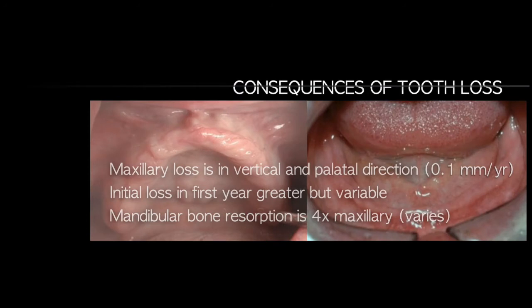Maxillary bone loss occurs in a vertical and palatal direction at a rate of 0.1 mm per year, with greater initial loss in the first year. On the other hand, mandibular bone loss is four times greater than maxillary loss, though it varies depending on the patient. These are average numbers representing the difference in resorption patterns between the maxilla and mandible.